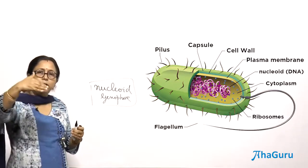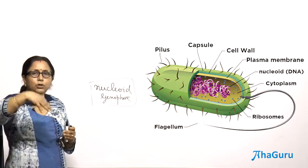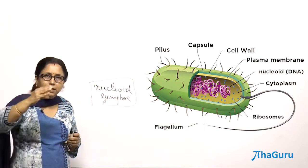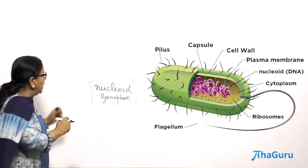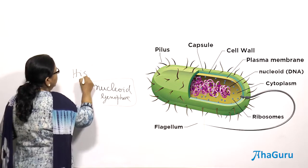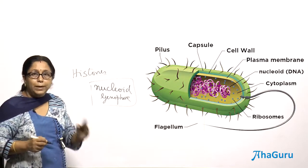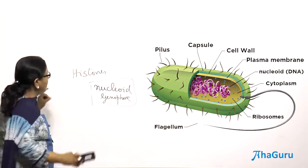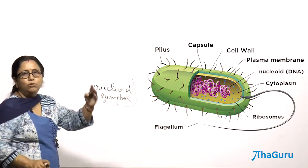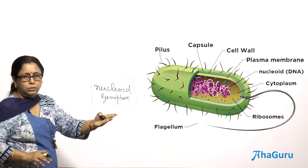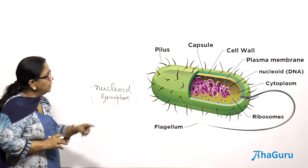If you look at the difference between eukaryotic DNA and prokaryotic DNA: in eukaryotes, the DNA is generally associated with special proteins known as histones. Histones are proteins found associated with the DNA in eukaryotes. But in prokaryotes, the DNA is called naked DNA — because it does not have histones or those associated proteins.